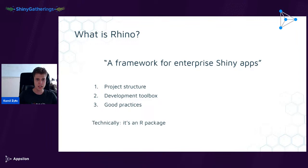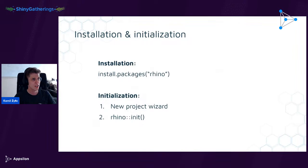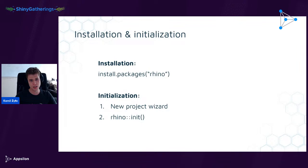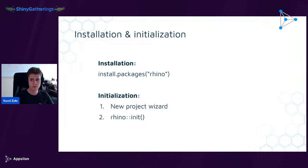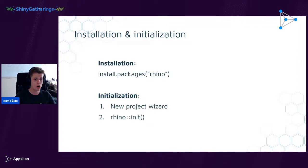Technically, Rhino is just an R package. To start working with it you install it like any other R package using the install.packages function. All the functionalities happen in the context of a Rhino project. To create such a structure you need to initialize it — either open RStudio and use the New Project Wizard choosing Rhino as a template, or call the rhino::init() function.